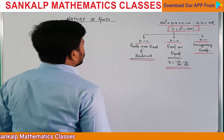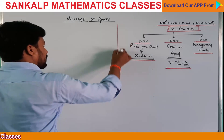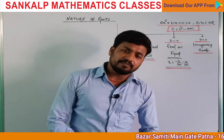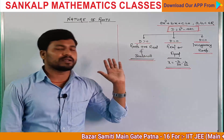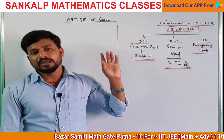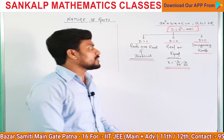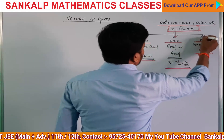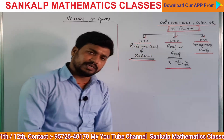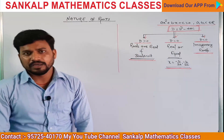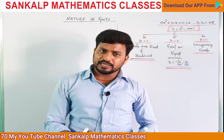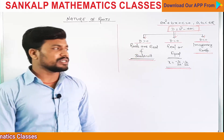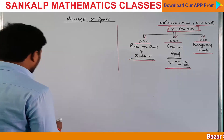अब मैं इसी की दूसरी approach आपको दिखाता हूँ। आप diagram ऐसे ध्यान रखोगे कि D से तीन links आएंगे — तीन ही चीज बनेगा जब ABC real number होगी।